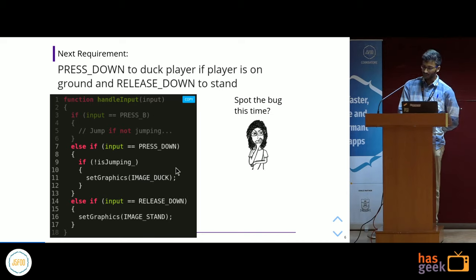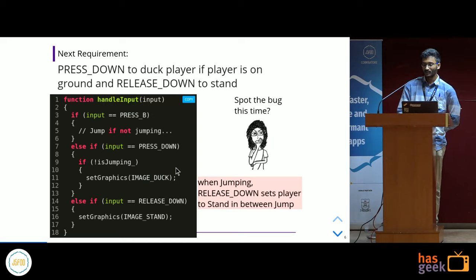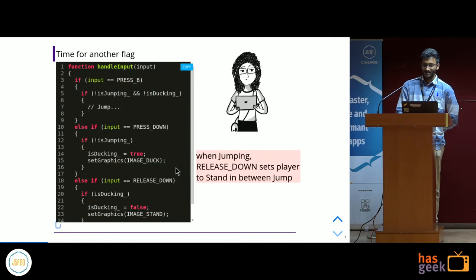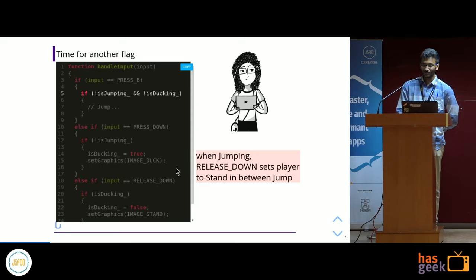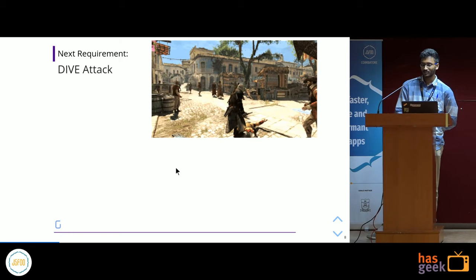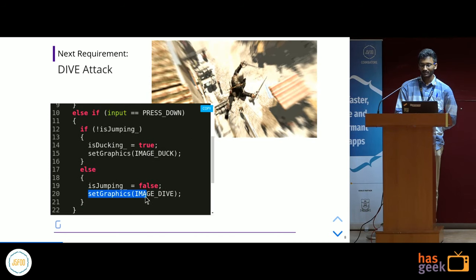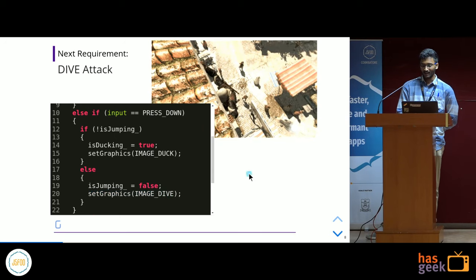If we take the first feature — jumping — when the user releases the down arrow while the player is jumping, the image gets set to standing in the middle of the jump. To fix this, we add one more flag saying only set stand if the player is not jumping and not ducking. And we can keep doing this. If we now want to add a dive attack — a ground pound — we add one more if condition on press of down while jumping, setting the graphics image as dive. But that again breaks something.